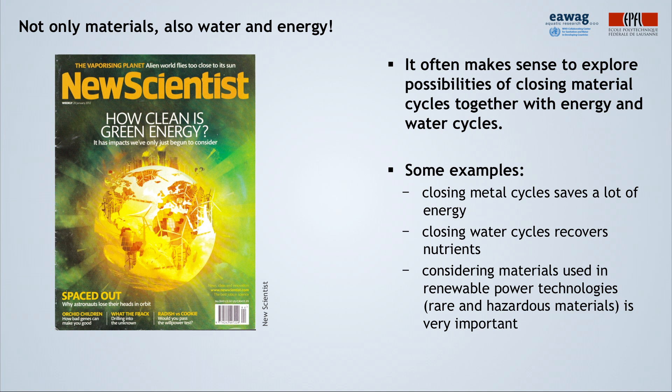It often makes sense to explore possibilities of closing material cycles together with energy and water cycles. For example, closing metal cycles saves a lot of energy. If we close water cycles, it allows recovery of nutrients. Also, for renewable energy, it is important to consider materials used for such technologies, as they often contain rare and hazardous materials.